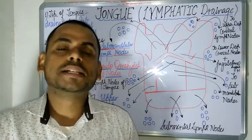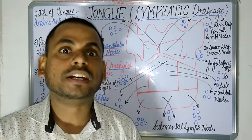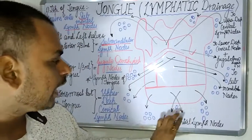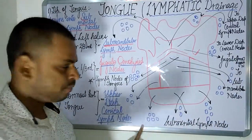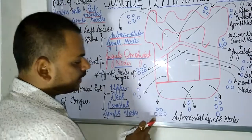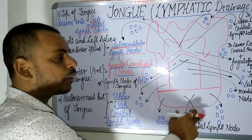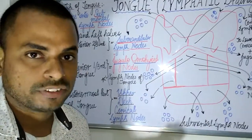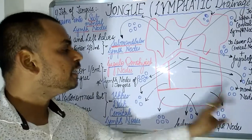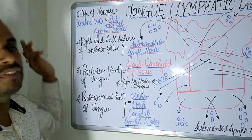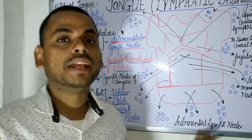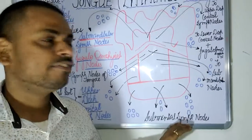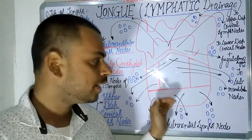Every region of the tongue drains into a specific lymph node. The blue-colored structures I have drawn are the lymph nodes, and the arrows indicate where drainage occurs. Beginning with the tip of the tongue — the tip drains into the submental lymph nodes.